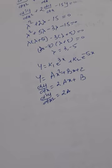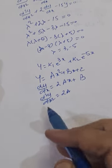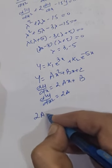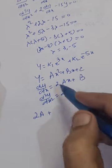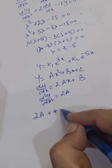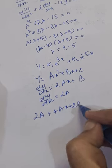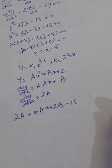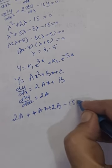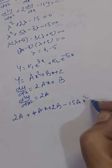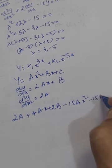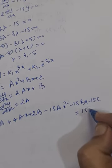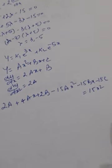Now we substitute these derivatives into the given differential equation. We get: 2a + 2(2ax + b) − 15(ax² + bx + c) = 15x². Grouping terms: −15ax² + (4a − 15b)x + (2a + 2b − 15c) = 15x².